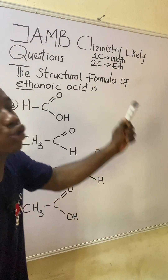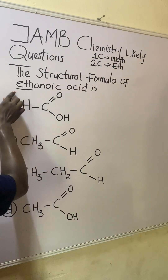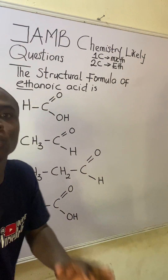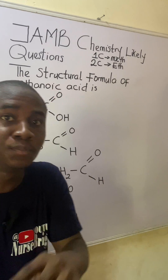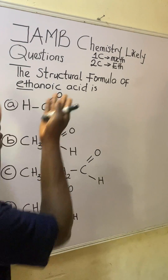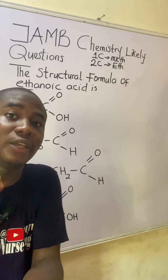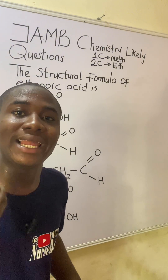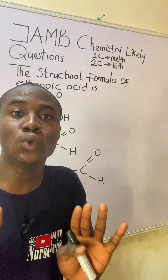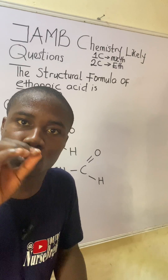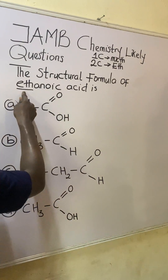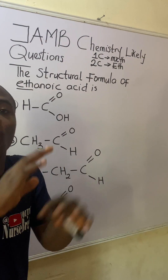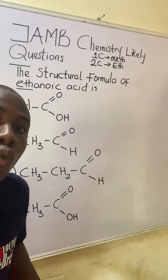So in the context of this question, the organic compound they are asking us to locate the structural formula for is 'eth-anoic acid.' This tells you that this compound should have two carbons. Let's use the elimination method before we go in depth to solve this question — since it is 'eth,' it should have two carbons.